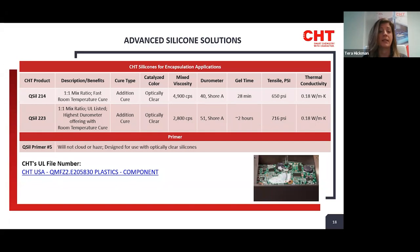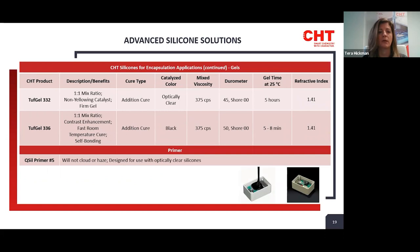The QCYL-214 is a fast room temperature cure, platinum-cure product with a 40 Shore A durometer. The QCYL-223 offers our highest durometer with room temp cure at about 51 Shore A and a slightly lower viscosity. The higher durometers help reduce dust and dirt collection. Both products are UL rated. To increase adhesion, we recommend our QCYL Primer Number 5, which is designed for optically clear applications and will not cloud or haze.